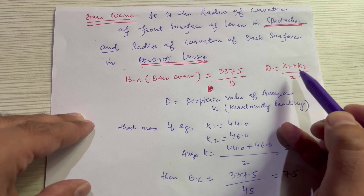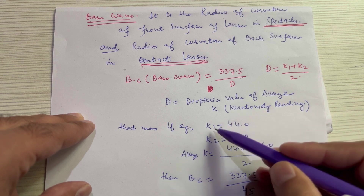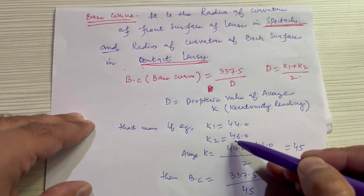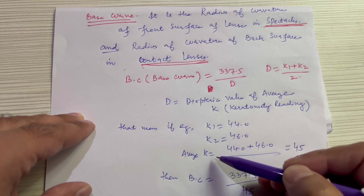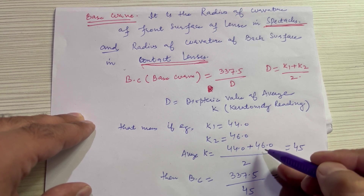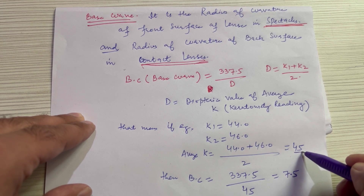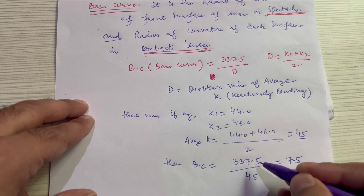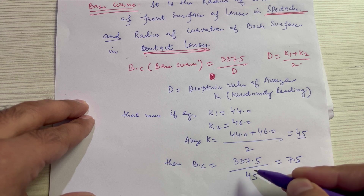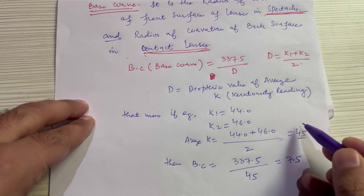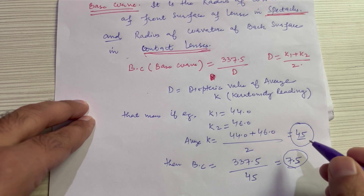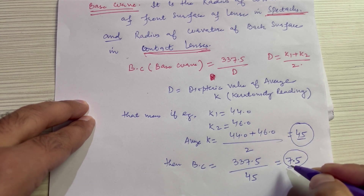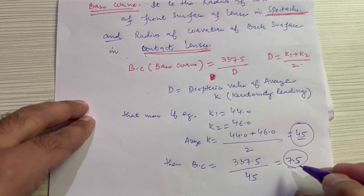For example, if K1 equals 44 and K2 equals 46, the average value D equals (44 + 46) / 2 = 45. The base curve will then be 337.5 divided by 45, which equals 7.5. This base curve value of 7.5 is important for the calculation of the final results of toric transposition.